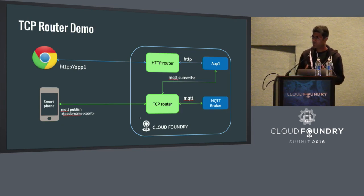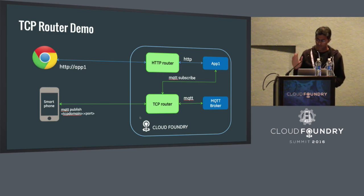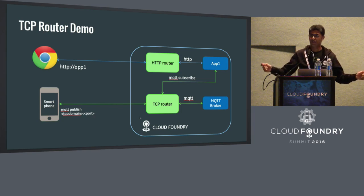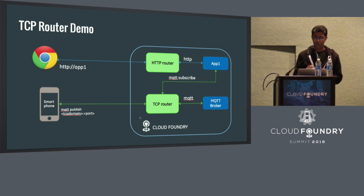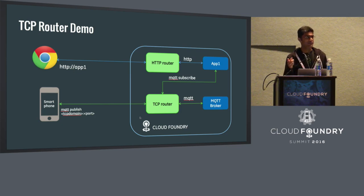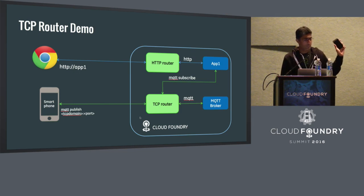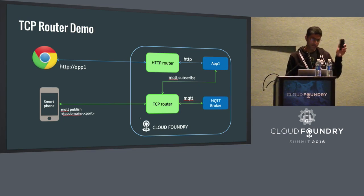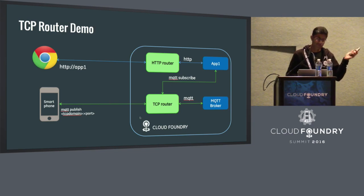For the demo, I'm going to push an MQTT broker — Mosquitto — as a CF app, create a TCP route, and bind that TCP route to the broker. Using this TCP route, MQTT publishers and subscribers can publish and receive data. I'll have a web app acting as an MQTT subscriber, and an Android app on my phone that publishes y-axis acceleration changes of the device to the broker, which will then stream to the app and appear on a graph.